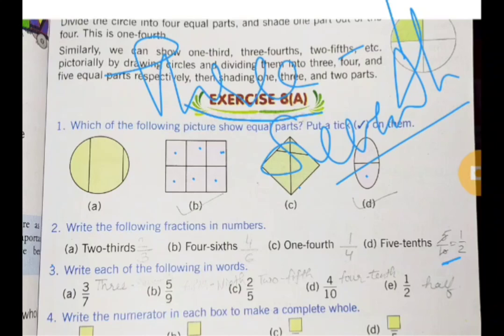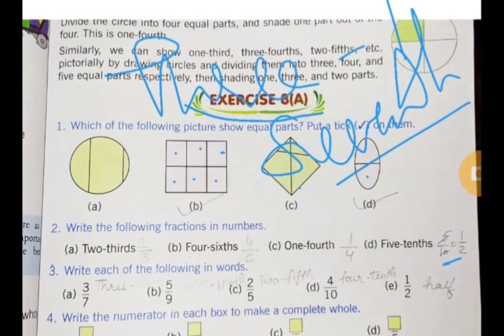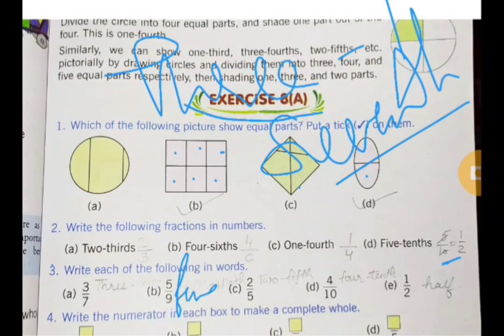Then 5 by 9 is five-ninths. So we have two-fifths, four-tenths, one-half, three-sevenths, five-ninths.